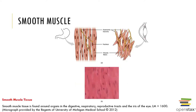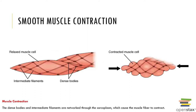We can also get a good look at smooth muscle. It's found, as the caption says, around the organs in the digestive, respiratory, and reproductive tracts, as well as in the eye.